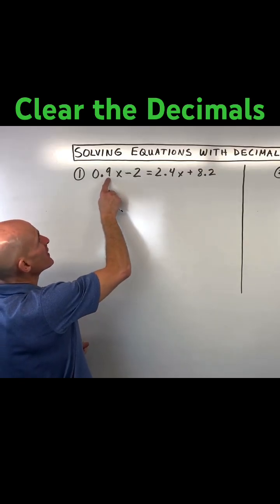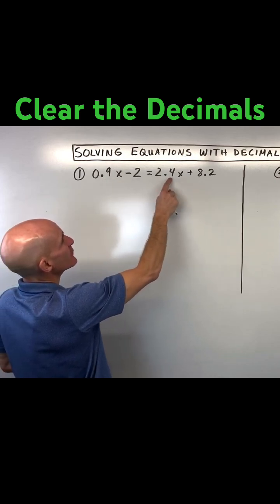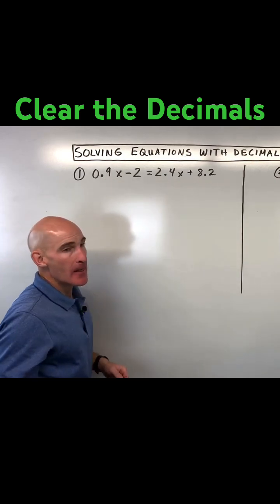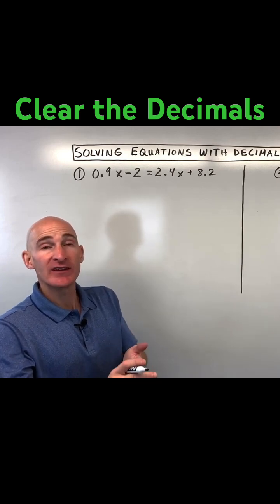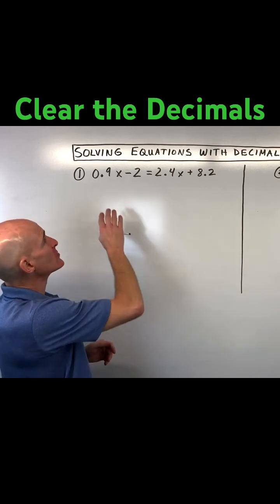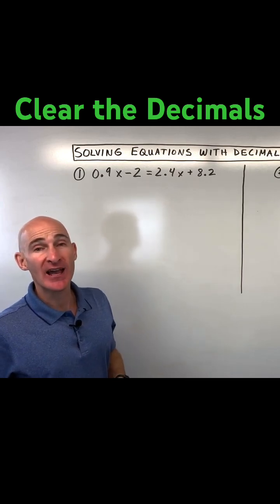Another thing you might notice is that there's really only one decimal place. See how this is 9 tenths and 4 tenths and 2 tenths. So what we can do to clear the decimals is we can multiply through this whole equation by the number 10.